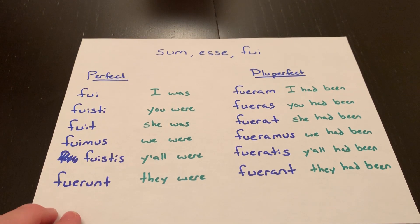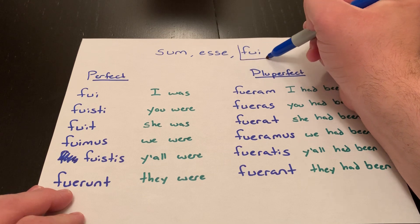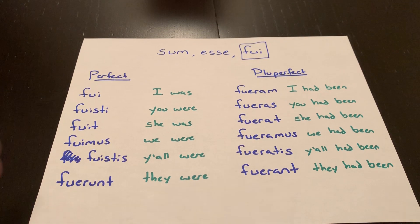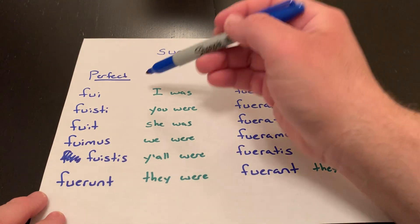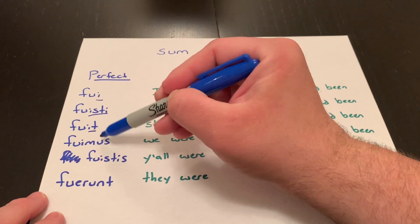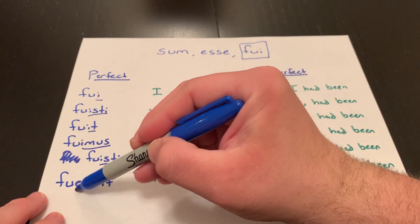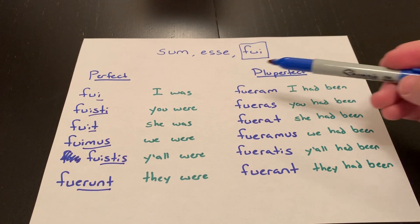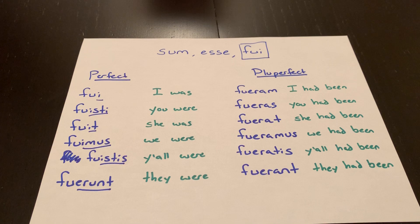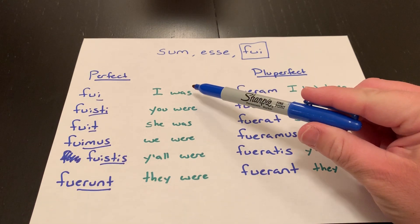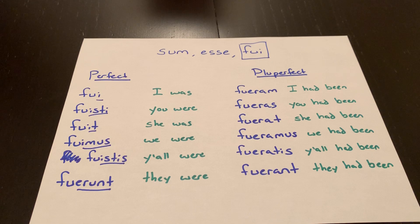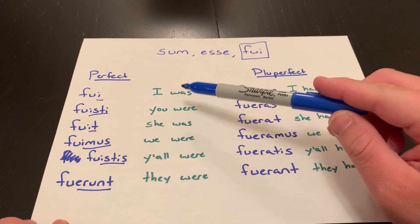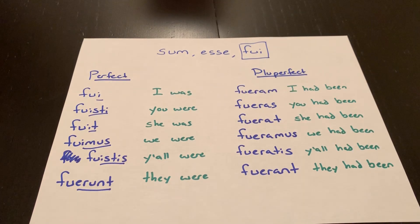If you forget how to form these but remember how to make the perfect, pluperfect, and future perfect tense, you can still form them because they're all built off the third principal part minus the I, plus whatever you need. So here we have the third principal part minus the I plus our perfect endings: I, ISTI, IT, IMUS, ISTIS, ERUNT. You get: FUIT, FUISTI, FUIT, FUIMUS, FUISTIS, FUERUNT. The translation is identical to the imperfect. In Latin, you will much more often see ERAM instead of FUI to say 'I was.'